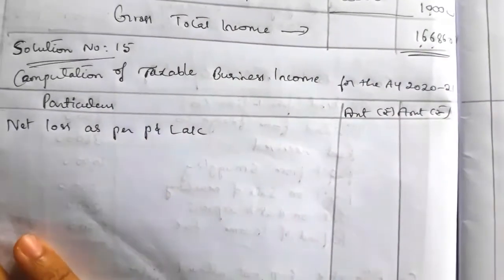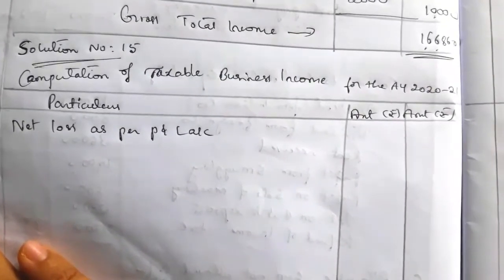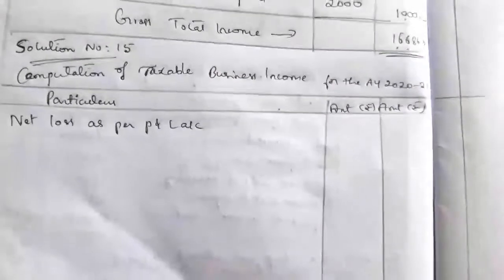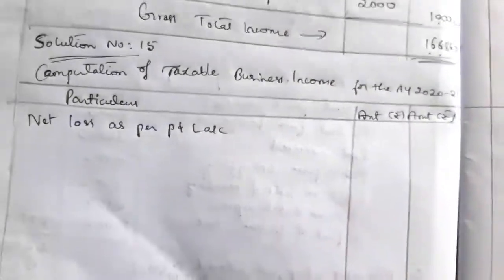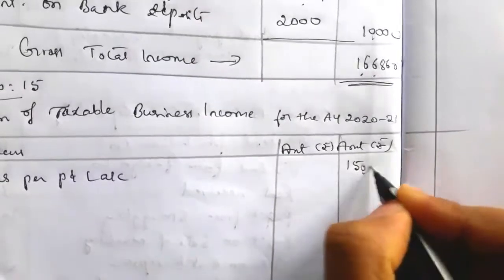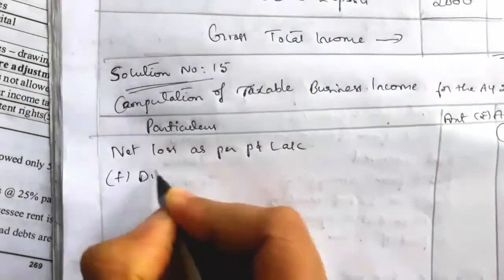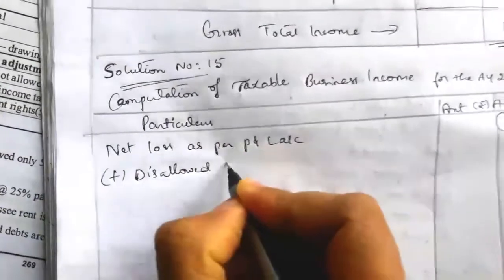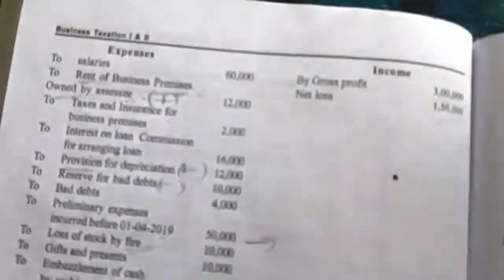Now we'll work out the solution. Write the heading: Computation of Taxable Business Income for the Assessment Year 2020-21. Draw three columns — particulars and two amount columns. Since net loss is given, write 'Net loss as per Profit and Loss Account' — the value is rupees 1,50,000 written in brackets as a negative value. Next, as usual, we add the disallowed expenses one by one.